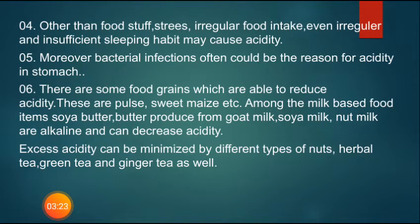Other than food, stress, irregular food intake, irregular and insufficient sleeping habits may cause acidity. Bacterial infections can also be a reason for acidity in the stomach. Some food grains can reduce acidity, such as pulse, sweet maize, etc. Milk-based items like soy butter, butter from goat milk, soy milk, and nut milk are alkaline and can decrease acidity. Excess acidity can also be minimized by different types of nuts, herbal tea, green tea, and ginger tea.